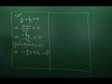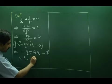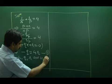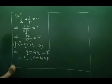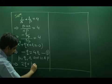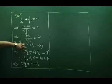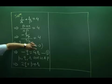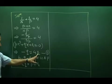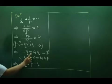Now, we will use the second information which is P, Q, R are in AP. It implies 2Q is equal to P plus R. We have already got the relation between Q and R which is minus Q is equal to 4R. So, we replace this Q by 4R.